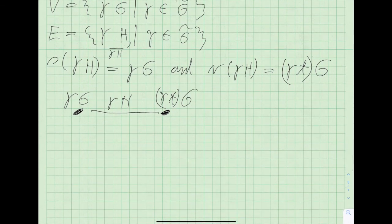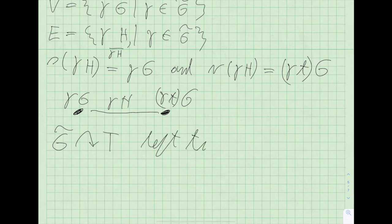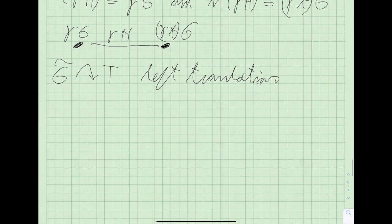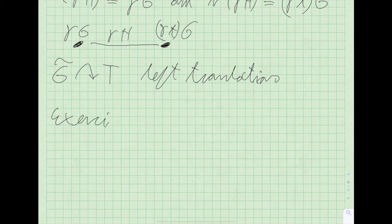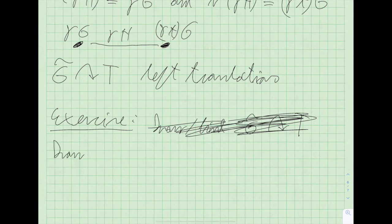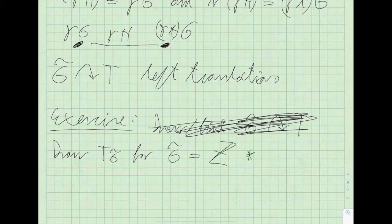There is an obvious way to get an action here — namely by left translation of cosets. I'm a bit short on time, so instead of drawing examples, I will give an exercise: draw this tree for the Baumslag-Solitar group of 2Z and 3Z. That will hopefully be instructive.